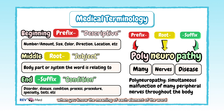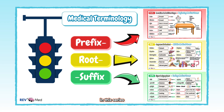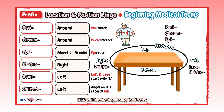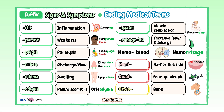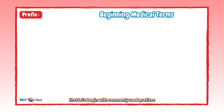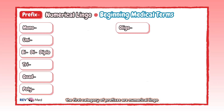When you know the meaning of each element of a word, you'll be able to make out most medical terms quickly. In this series, look out for the color coding: red will be the prefix, yellow will be the root, and green will be the suffix.